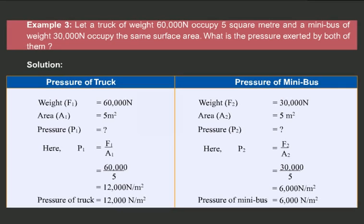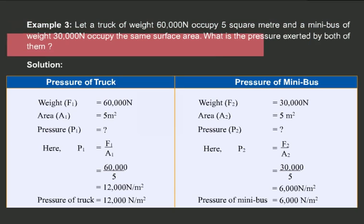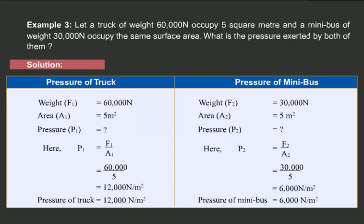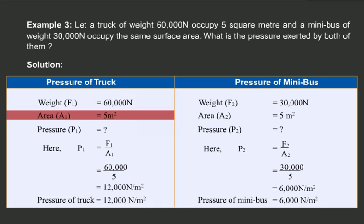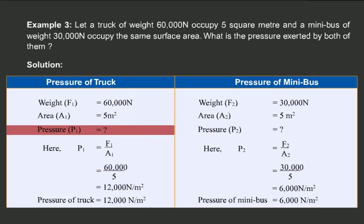Students, now let us look at another example. Let a truck of weight 60,000 Newton occupy 5 square meter, and a minibus of weight 30,000 Newton occupy the same surface area. What is the pressure exerted by both of them? For the pressure of the truck, the weight or force, that is F1, is equal to 60,000 Newton. The area, or A1, is equal to 5 meter square, and we have to calculate the pressure, that is P1.